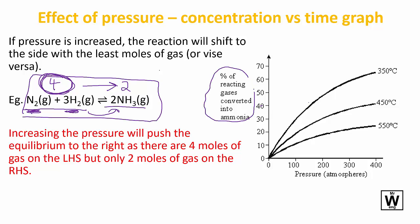So here we have percent of reacting gases that's converting to ammonia, and as you can see as the pressure increases, the amount of ammonia also increases.